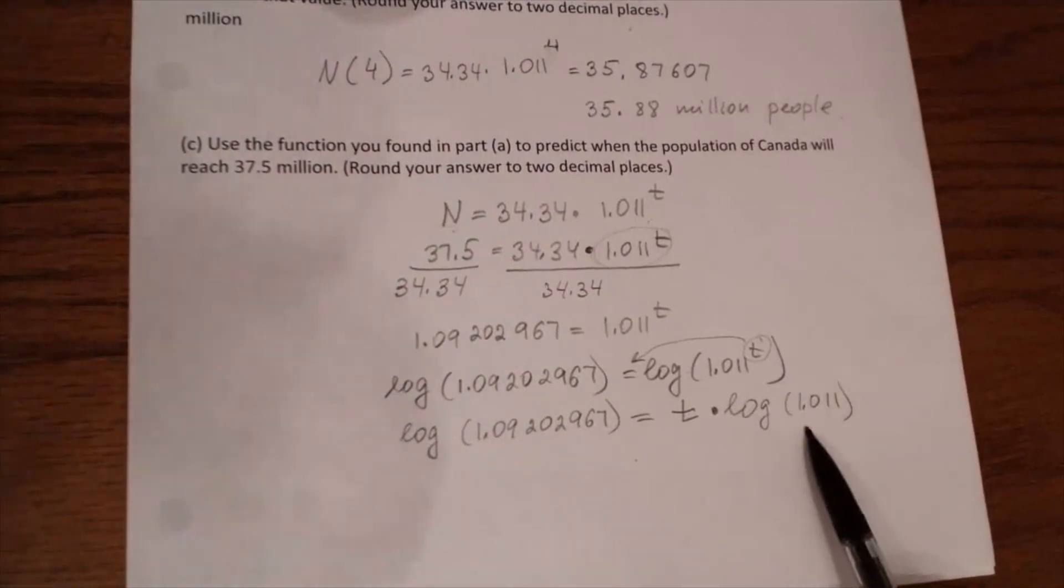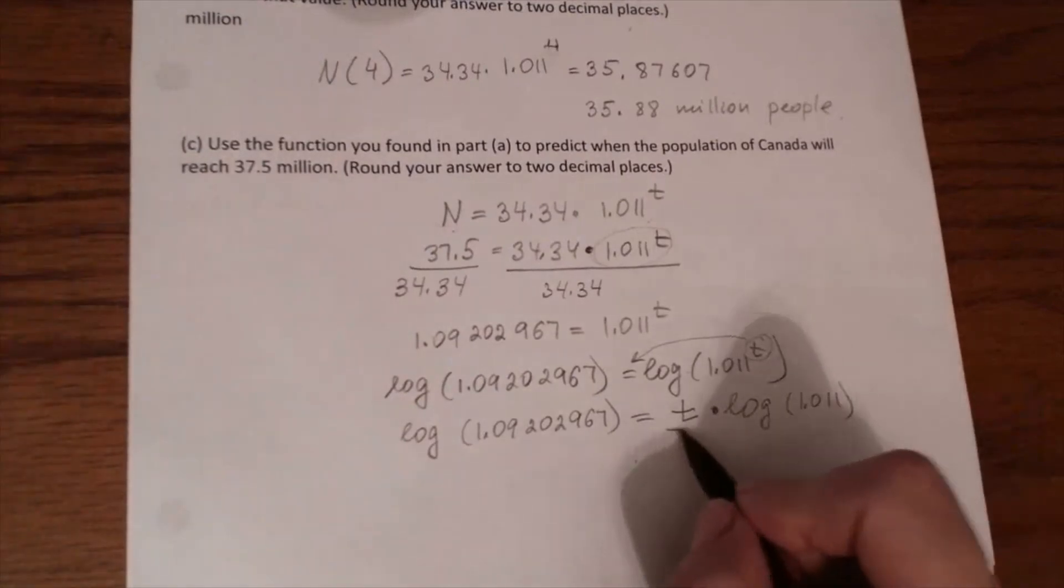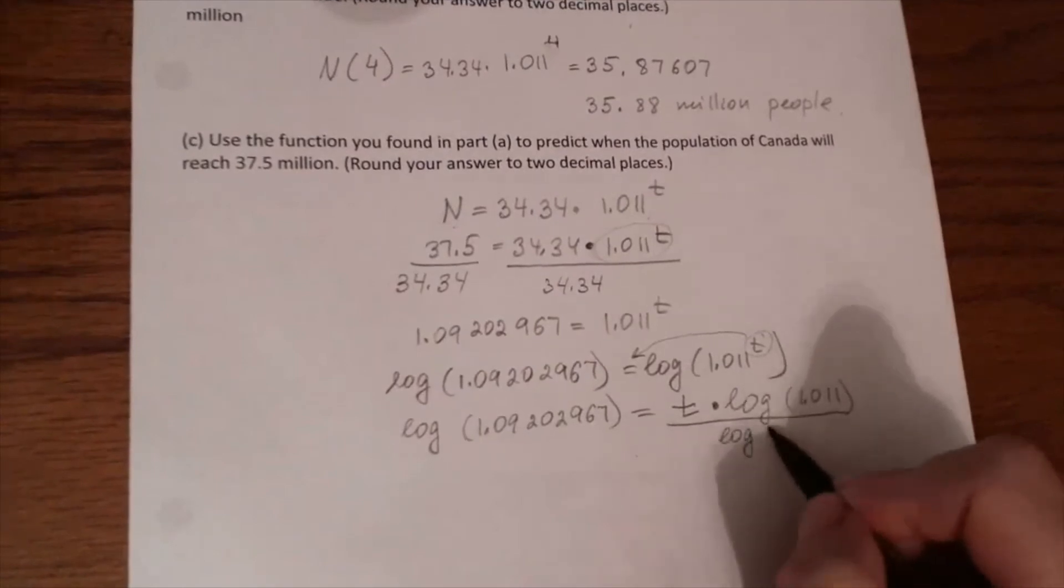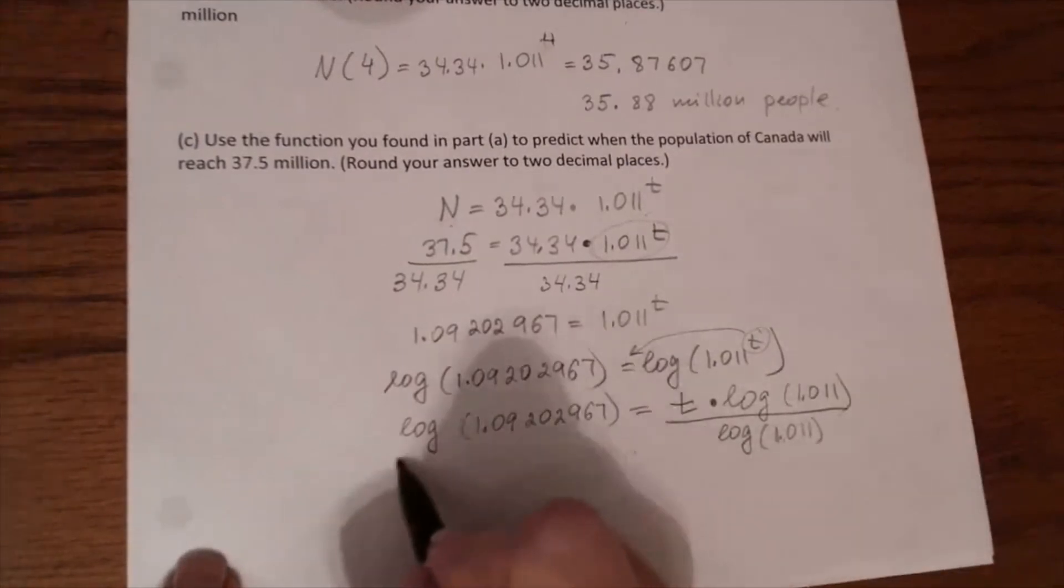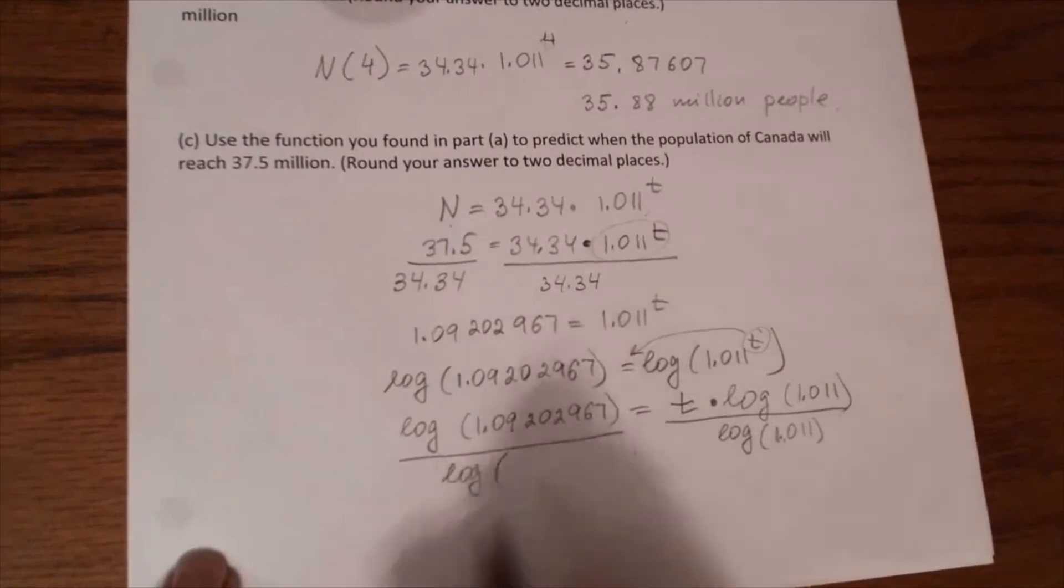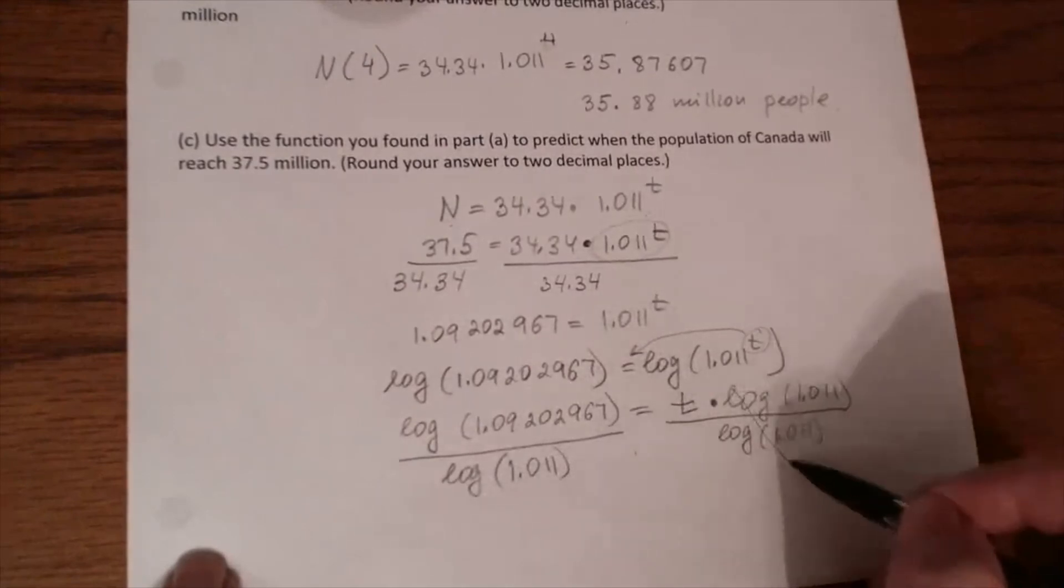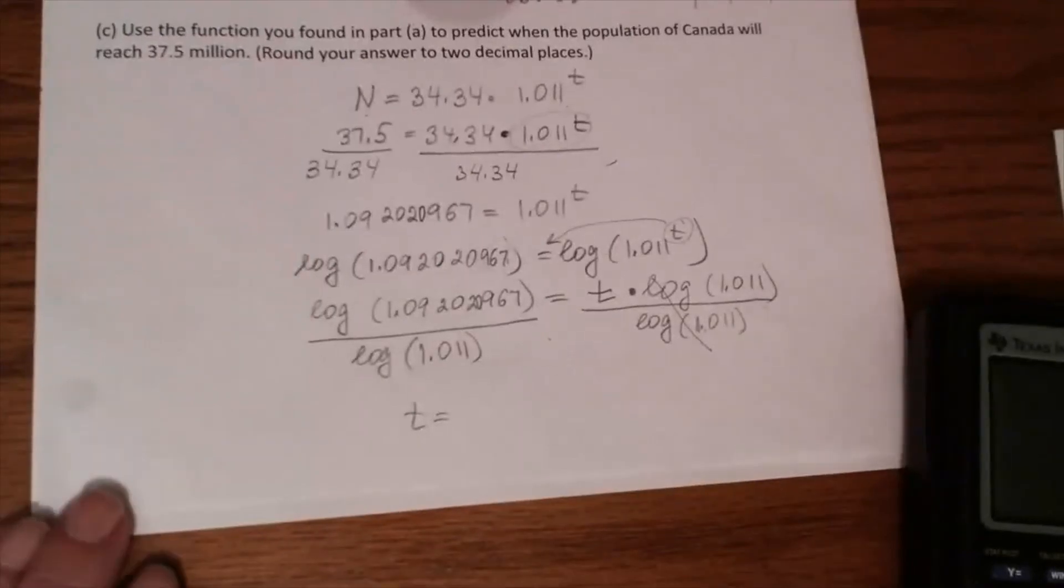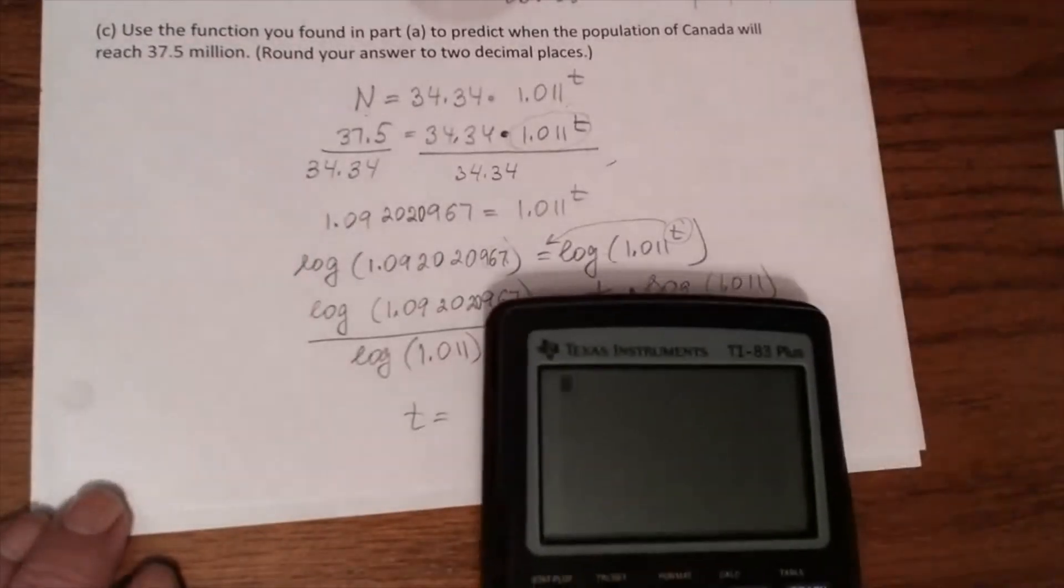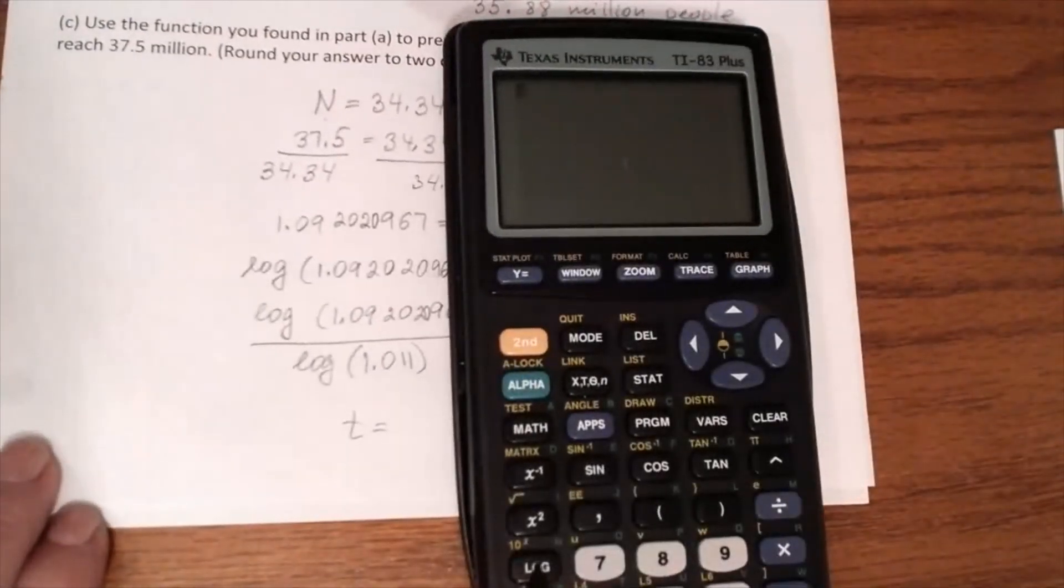And again, logarithm of a number is a number. And we have a variable T. And to have T by itself, we have to divide both sides by logarithm of 1.011. So here it will cancel out, so we will have T.